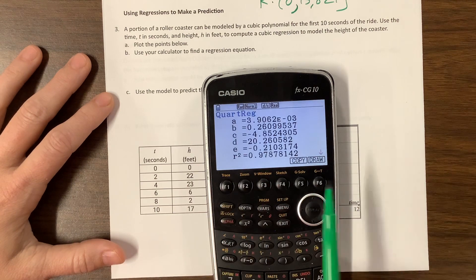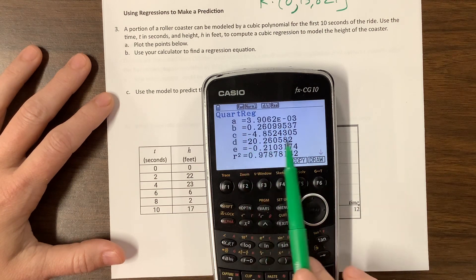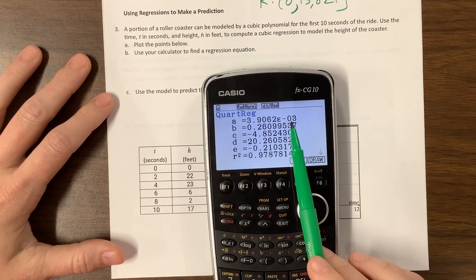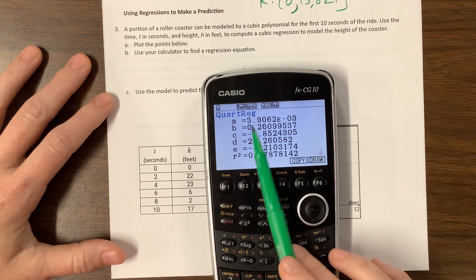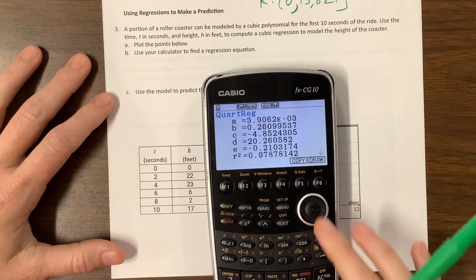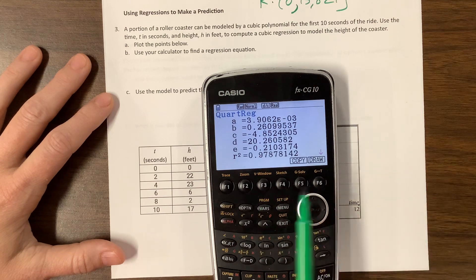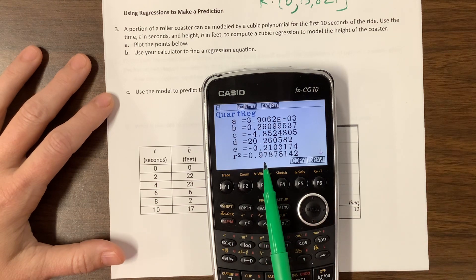I don't know. And so now it's giving me new values here. And this one is a scientific notation, so we'd have to move the decimal three places. But I'm going to copy this into y2 so I can compare the two.